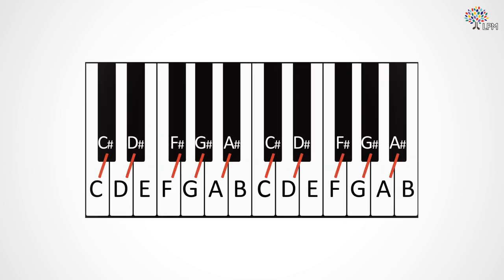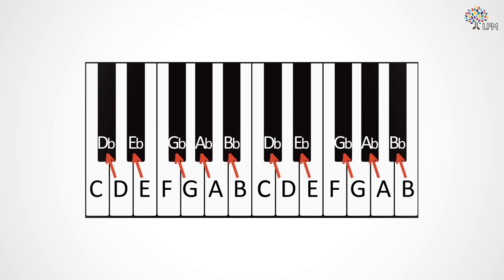Just add sharp to any letter name and you'll get the key just to the right or to the ear higher than the white key with that letter name. If you add flat to any letter name, you'll go one key to the left, or the one that sounds just a little bit lower.